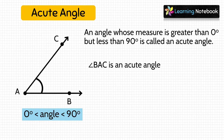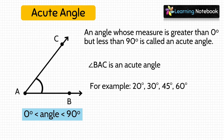Some examples of acute angles can be 20 degrees, 30 degrees, 45 degrees, and 60 degrees. All these angles are acute angles.